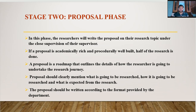Stage two is the proposal phase. After being clear about the research problem, gap, and issue, the researcher has to draft a proposal. A proposal is simply a plan for carrying out research. The researcher in this stage will write a proposal on their research topic under the close supervision of a supervisor. If a proposal is academically rich and procedurally well-built, 50% of the work is done — completing the proposal is like completion of almost half the task. A research proposal is a roadmap that outlines the details of how the research will be undertaken; it is the blueprint of the whole research venture. The proposal should be written according to the format provided by the department.